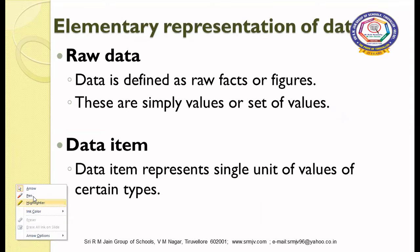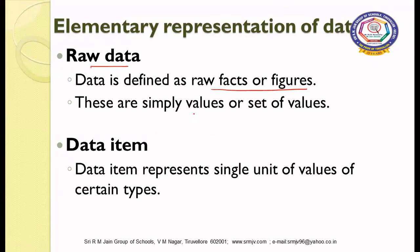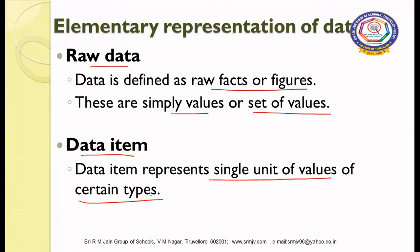Here are the elements of data. Raw data is defined as raw parts and figures — simply values or a set of values. Whatever input we give is termed as raw data. If you process that data, it will be termed as a data item. A data item represents a single unit of values of a certain type. For example, all the marks of a student would be called a data item.